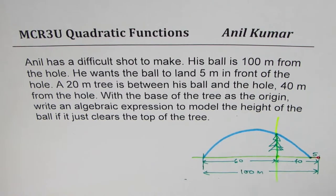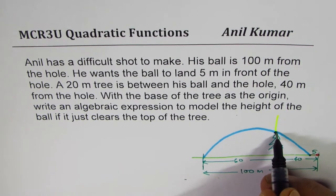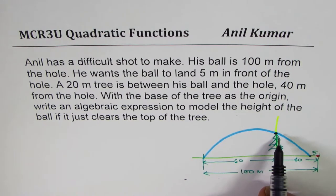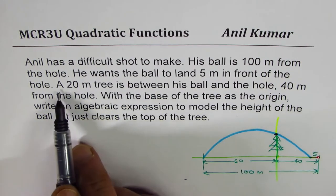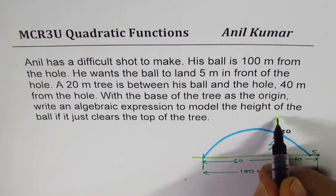That means we are also given this point. If that is the base, then the y-intercept for us is the height of the tree, which is 20 meters.